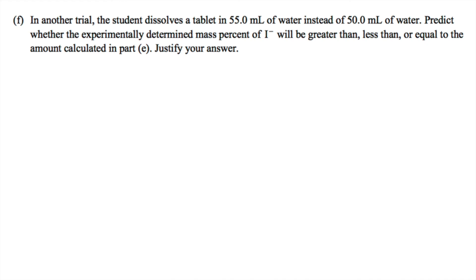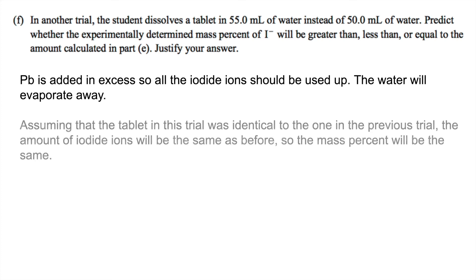Part F says, in another trial, the student dissolves a tablet in 55 milliliters of water instead of 50 milliliters of water. Predict whether the experimentally determined mass percent of iodide will be greater than, less than, or equal to the amount calculated in Part E. Justify your answer. So because we said that lead is added in excess, all the iodide ions are still going to be used up and the water will evaporate away. So this means that mass percent of iodide is still going to be the same, assuming that the tablet was identical to the one in the first trial, because the number of iodide ions is still going to be the same.